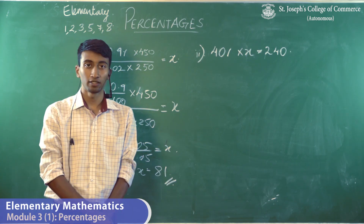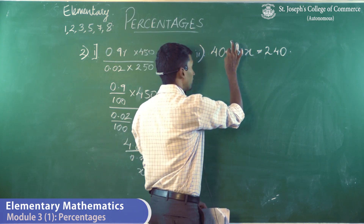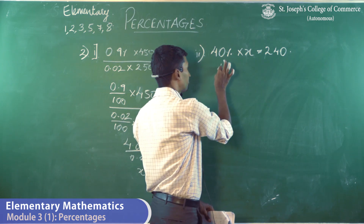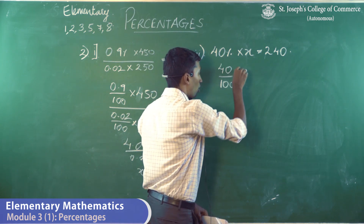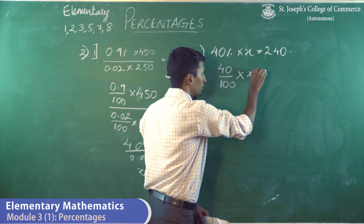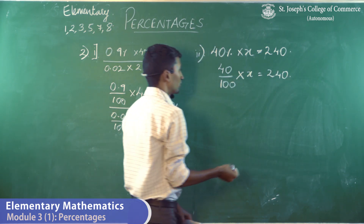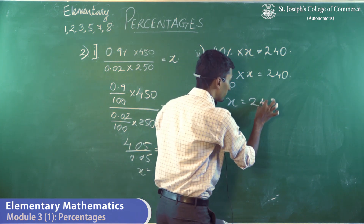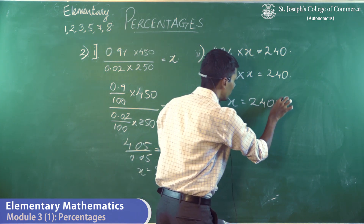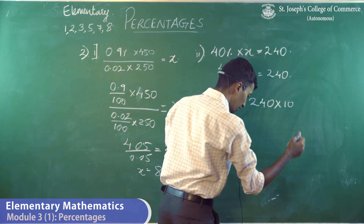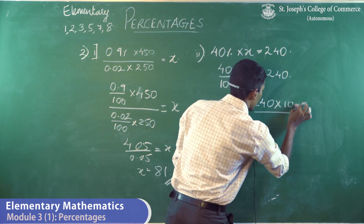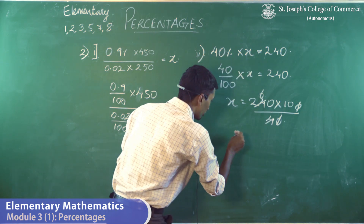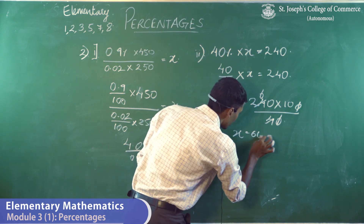Moving on to part two of that question: 40% of x is 240. So 40/100 × x = 240. Taking 40/100 to the other side, it becomes x = 240 × 100/40. Solving it, x is equal to 600.